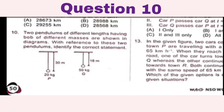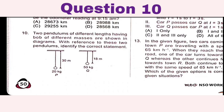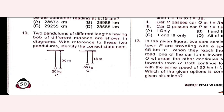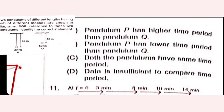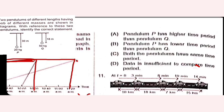Pendulums of different lengths with bobs of different masses are shown. The mass of the bob does not affect the time period. If the length of pendulum P is greater than pendulum Q, then P has a higher time period. So pendulum P has a higher time period than pendulum Q, and option A is the right answer.